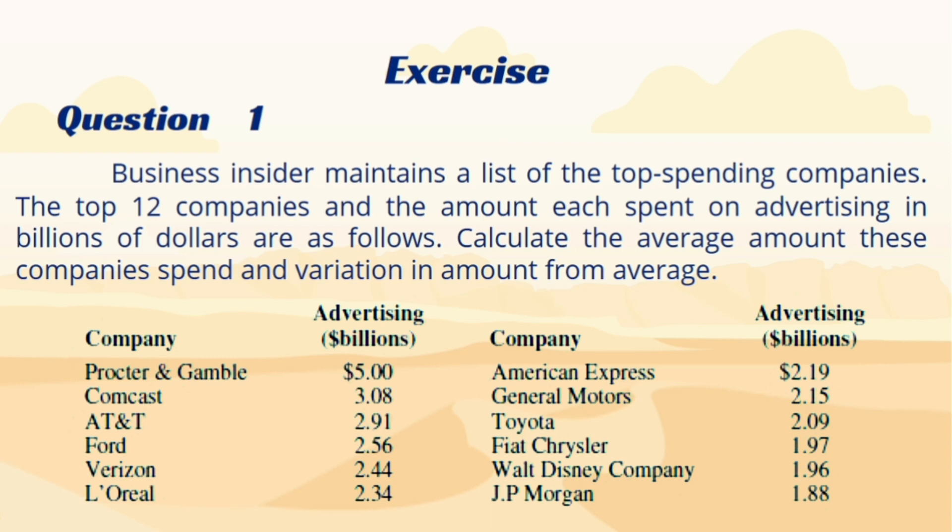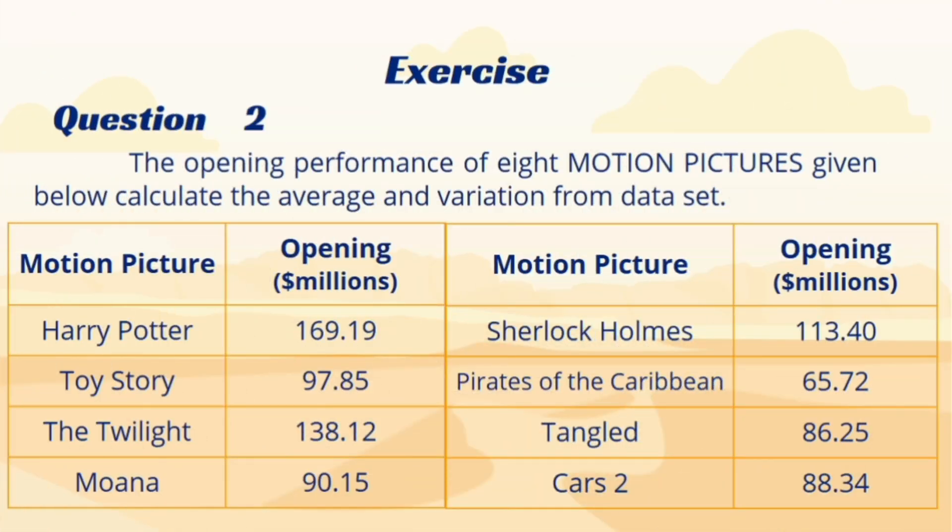Now we move to exercise section. Here in first question, Business Insider has shared the advertisement amount of top 12 companies. Calculate the average and variation in amount. In second question, the opening of different blockbuster movies has been given in million dollars. You need to find the average and variation.